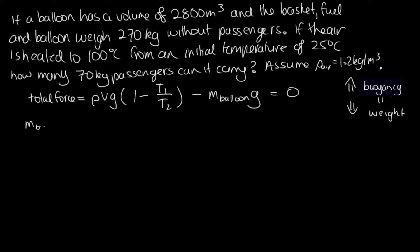So we can rearrange this equation. We've got that the mass of the balloon, and this is the total weight of the balloon including the passengers, is equal to rho V g times (1 minus T1 on T2). Now we can cancel out little g from each side. We know rho, it's 1.2. We're told the volume of the balloon, that's 2,800 meters cubed.